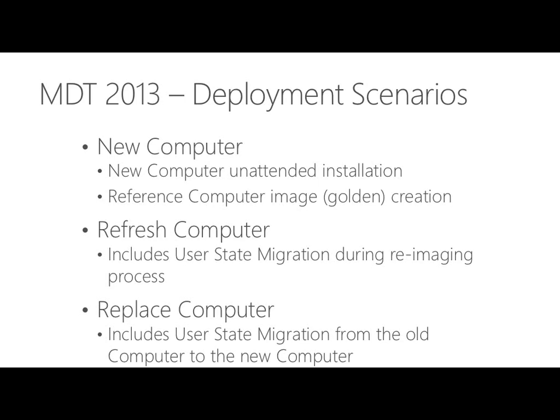We'll also use the refresh scenario as well as the replace scenario. The difference is that if we're going refresh, everything's on the same machine and we're still using USMT. Going from Windows XP to Windows 8.1, we need to make sure we're using the right version of USMT for the different parts of the process. With the replace computer scenario, we're lifting someone's machine out and putting a new one in place, so the main difference is where we store the user data — we don't have the ability to use hard link migration.